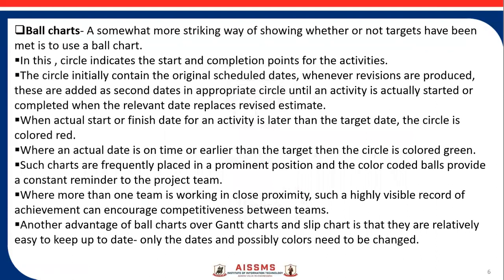Another way to show project progress is the ball chart. A ball chart is a more striking way of showing whether or not targets have been met. In this chart we make use of circles, where each circle contains the activity details and can be colored based on whether the activity is meeting the schedule or is ahead of it. The circle indicates the start and completion points for the activity. The circle initially contains the original scheduled dates, and whenever revisions are produced, these are added as second dates in the appropriate circle, until an activity is actually started or completed. When the actual start or finish date for an activity is later than the target date, the circle is colored red.